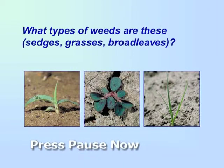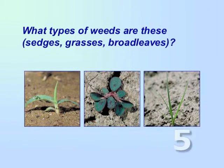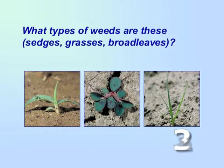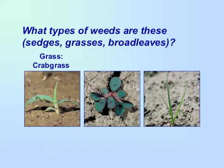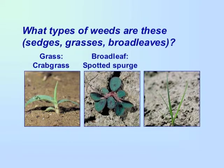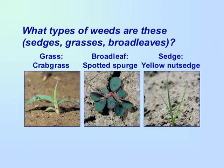The answer will be revealed in five seconds. These are a grass — crabgrass; a broadleaf — spotted spurge; and a sedge — yellow nutsedge.